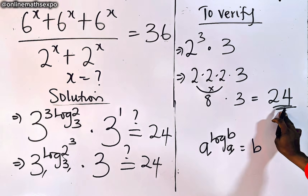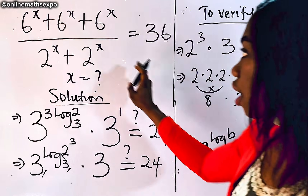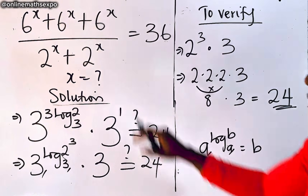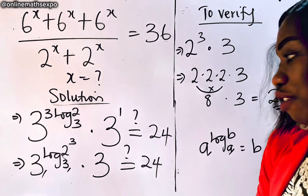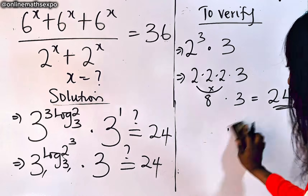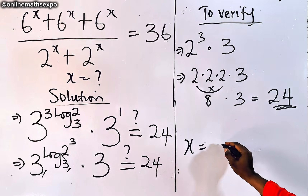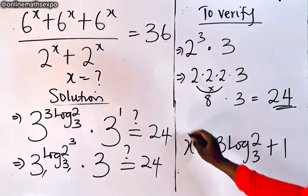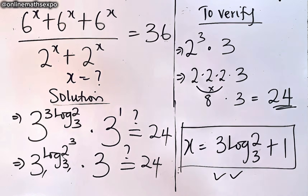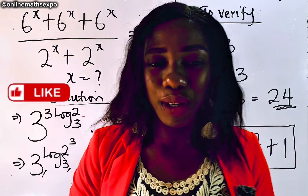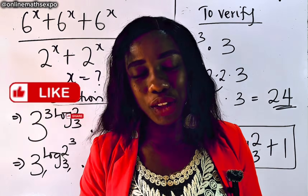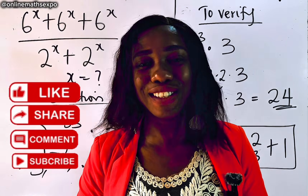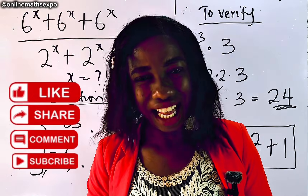Since this gives us 24, it also means substituting x into the original left side gives us 36, because the two equations are equivalent. So we can now conclude that x equals 3 log₃2 plus 1 is absolutely correct. I hope you really learned something — I'd also be curious to see your own methods. Don't forget to give us a thumbs up, share this with others, and hit that subscription button if you're new. Thank you for choosing to learn through us, and I hope to see you in my next class. Bye!